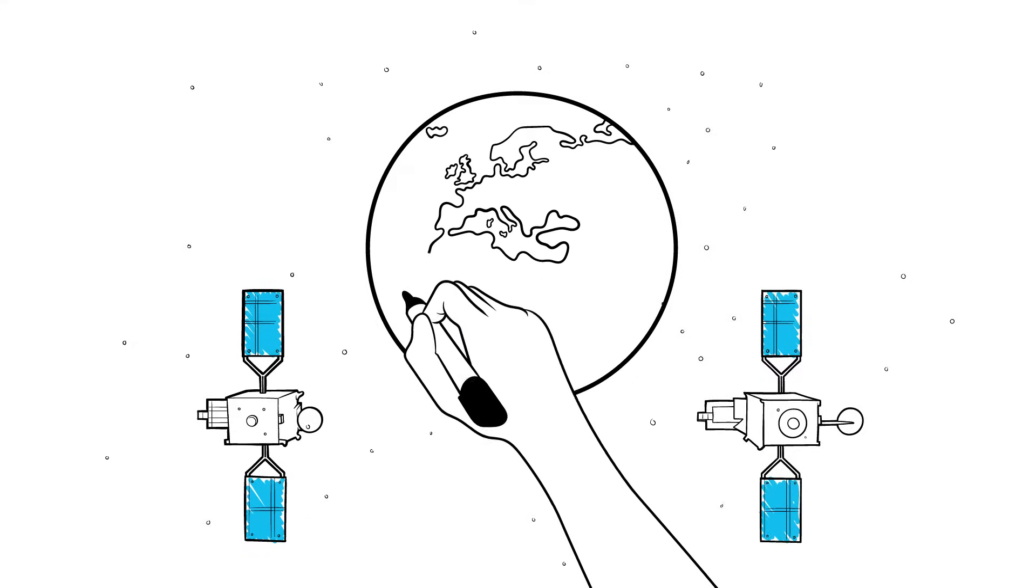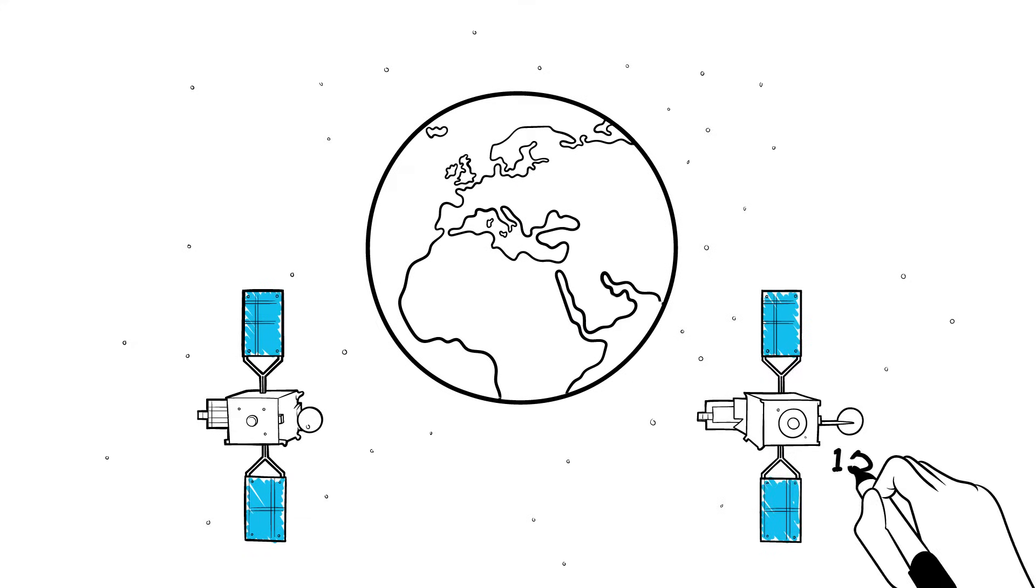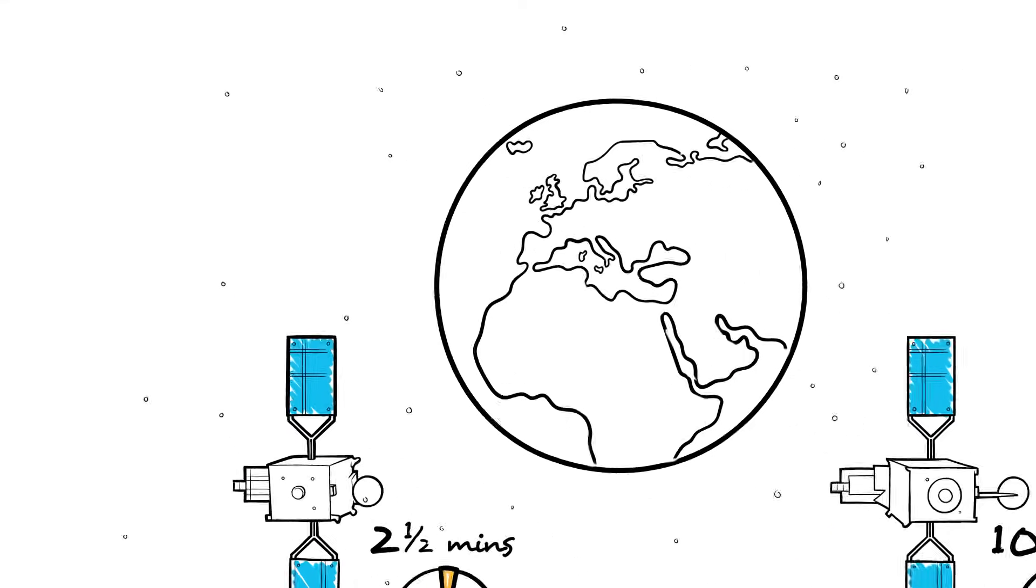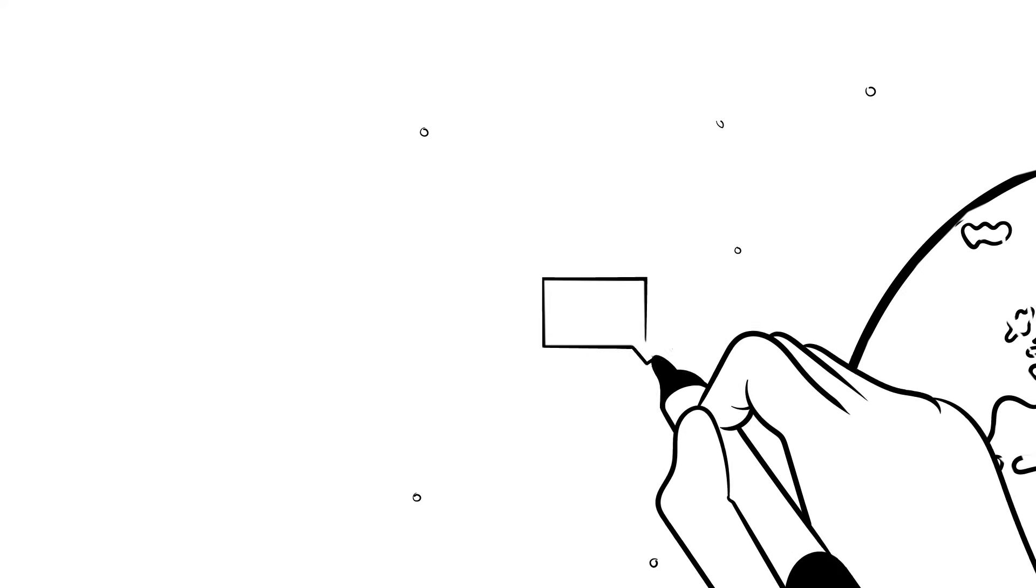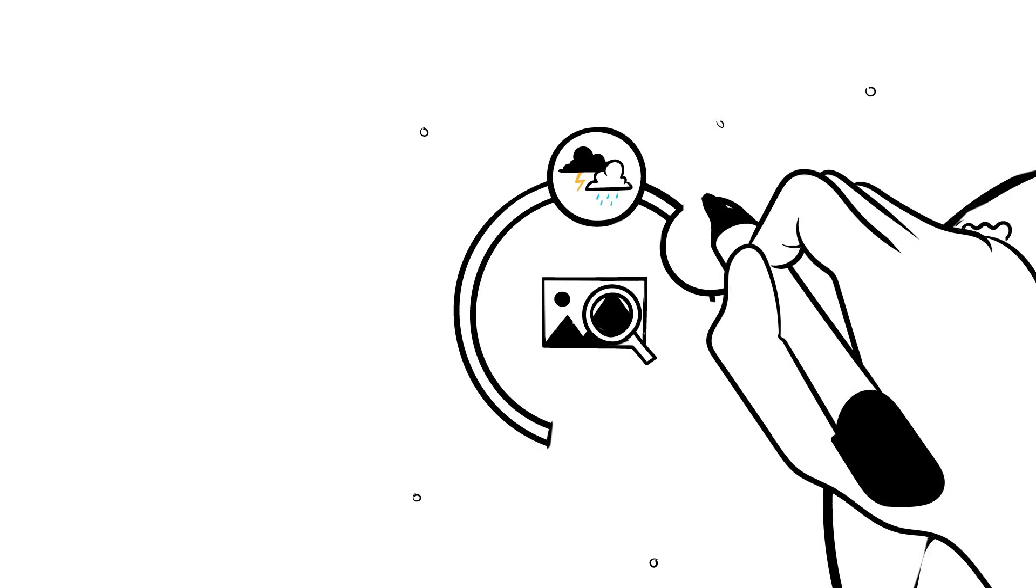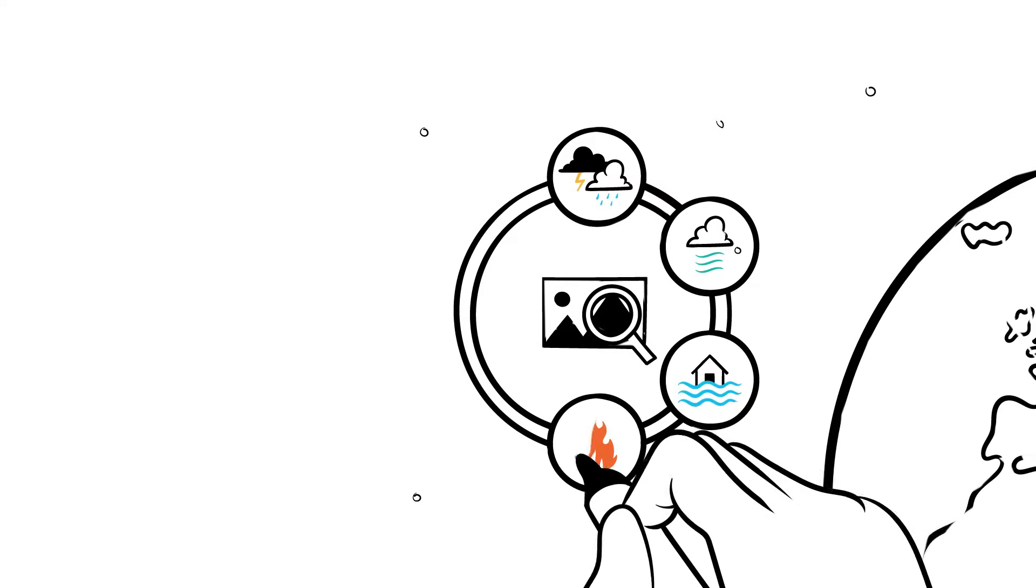Two imaging satellites will work to scan Europe and Africa every 10 minutes and Europe every two and a half minutes, taking higher resolution imagery to monitor the build-up of storms, fog, floods and fires.